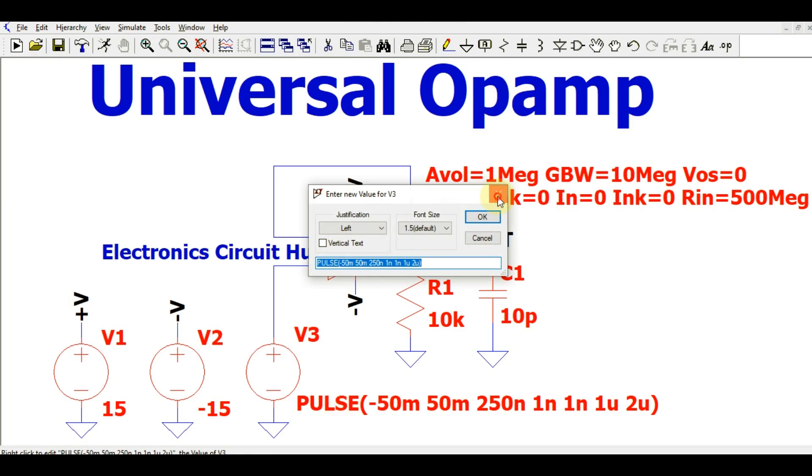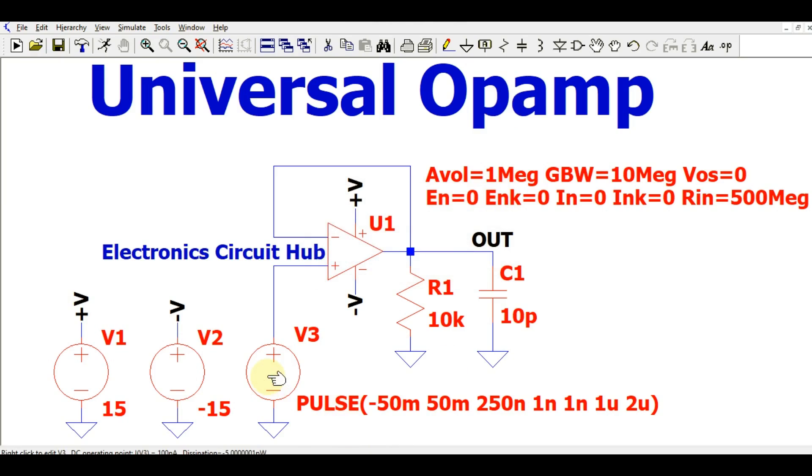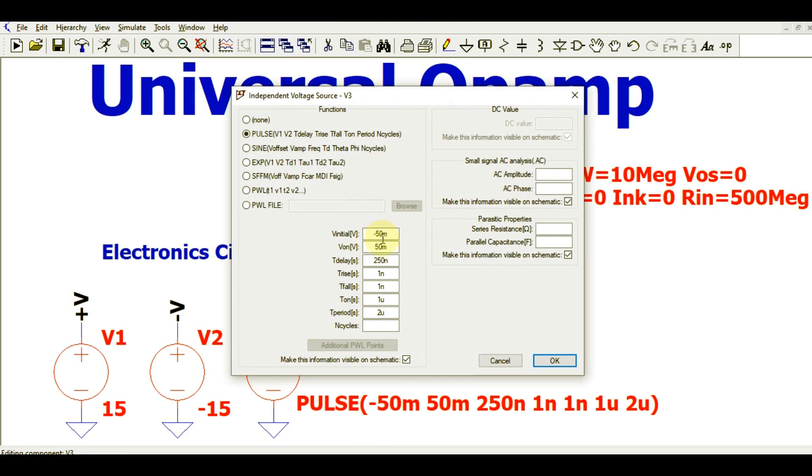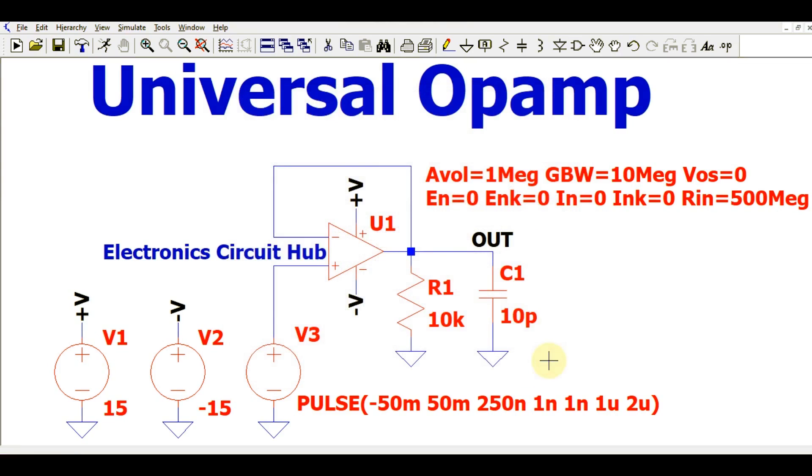If you want to see what is the signal, you can just click on here and you can see the parameter, like the initial voltage is 50 mV, V1 50 mV, T delay time, rise time, fall time, on-period, off-period.